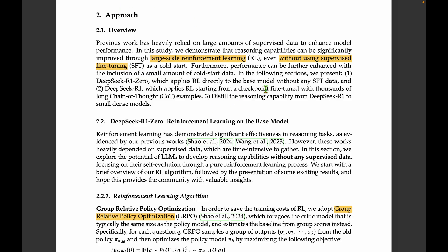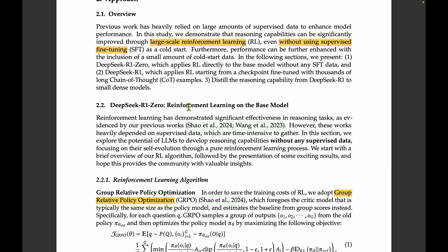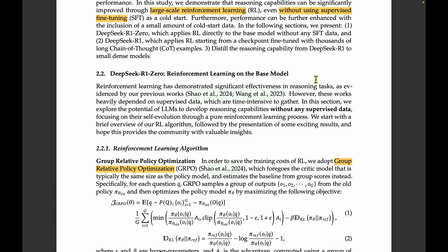For the training approach, DeepSeek R1-Zero applies reinforcement learning directly without any supervised fine-tuning. DeepSeek R1, however, applies reinforcement learning starting from a fine-tuned checkpoint, where supervised fine-tuning uses thousands of chain-of-thought examples. They also distill the reasoning model from DeepSeek R1 into smaller dense models — specifically LLaMA and Qwen.